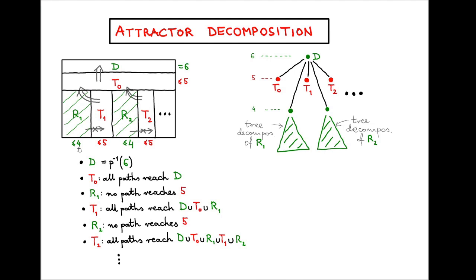An attractor decomposition is a recursive structure in which some of the sets — the green ones — get their own decompositions. The order in which we apply these operations matters, and we reflect that by denoting this recursive structure using ordered trees. In this tree reflecting the structure of the attractor decomposition, the order matters. The children of the root, labeled by set D, are ordered from left to right.